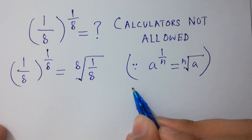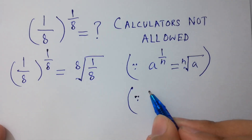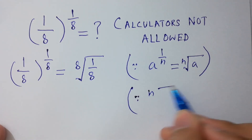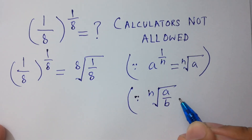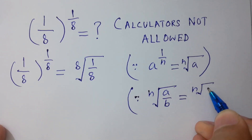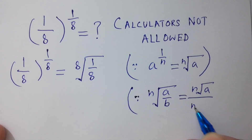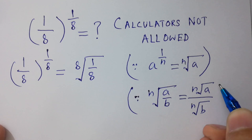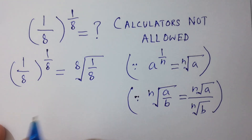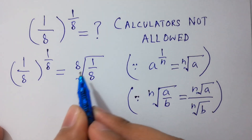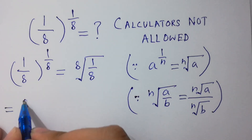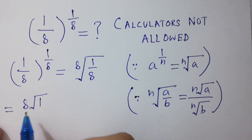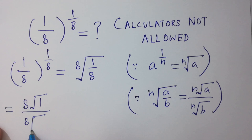In the next step, since the n-th root of (a/b) equals the n-th root of a over the n-th root of b, we can write the 8th root of (1/8) as the 8th root of 1 over the 8th root of 8.